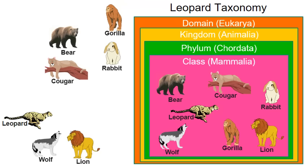Finally, at the species level, the leopard's species name is pardus — so the lion is eliminated, and we have the complete taxonomy of a leopard. Bringing back the rabbit, lion, and leopard, we can compare and contrast all three using these taxonomy levels to see their relationships.